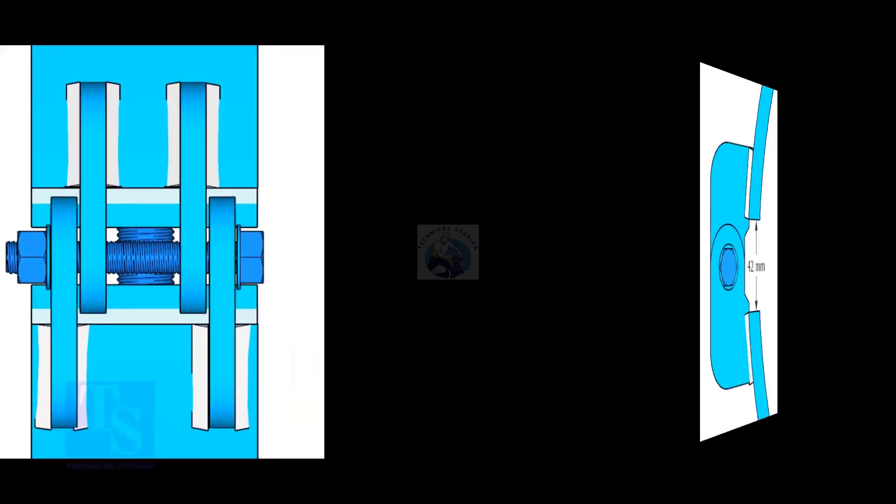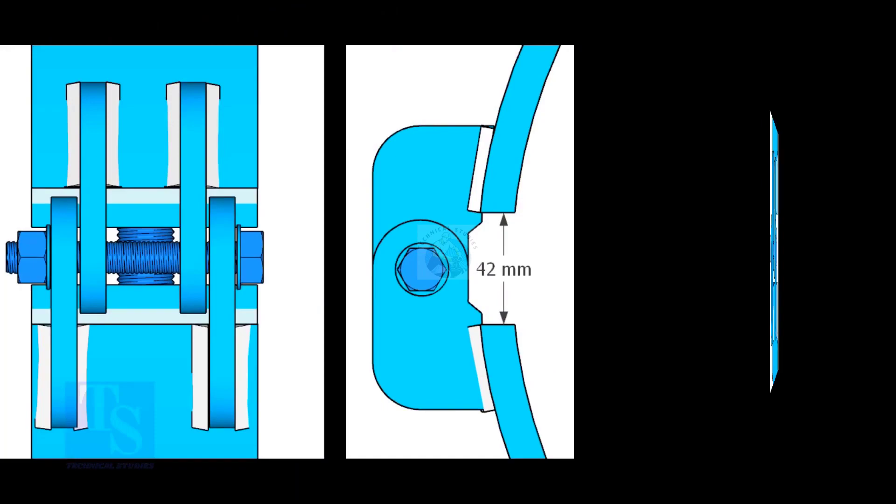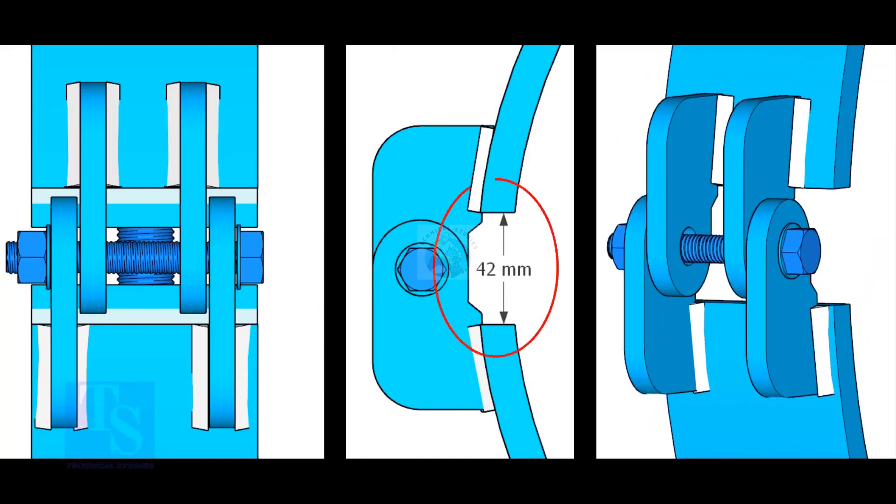Weld the hinges as shown. Five millimeters fillet weld is enough. The gap shown is not very important, it depends on the thickness of the clamp.